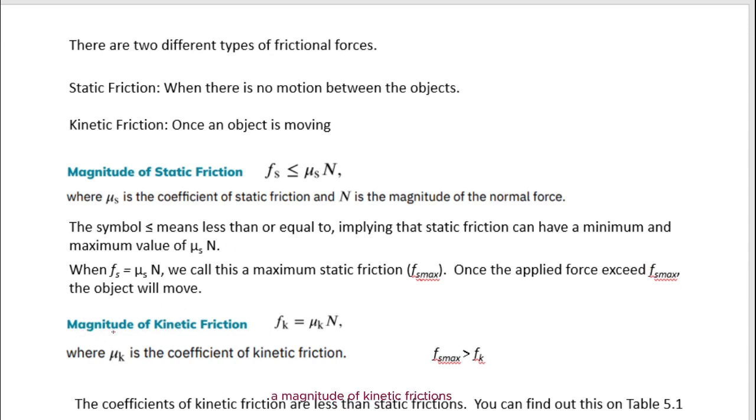The magnitude of kinetic friction can be calculated with this equation here. Kinetic friction force equals mu k times n, where mu k is the coefficient of kinetic friction, and n is the magnitude of the normal force.